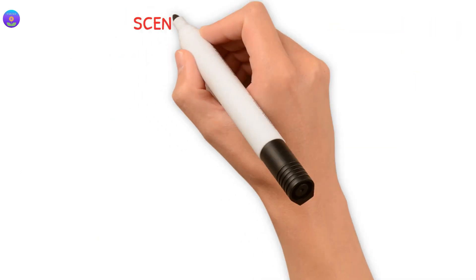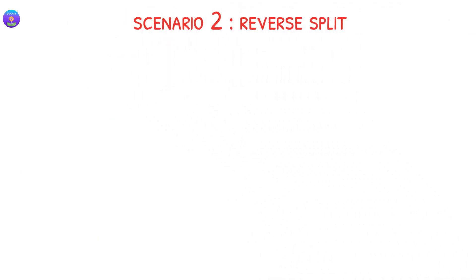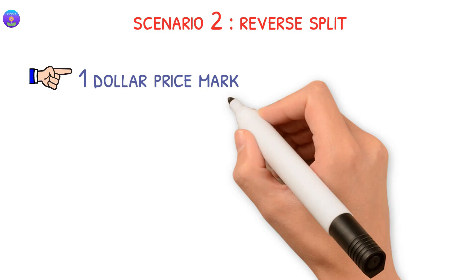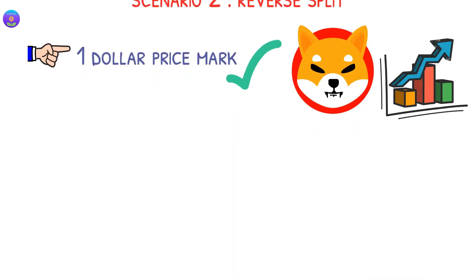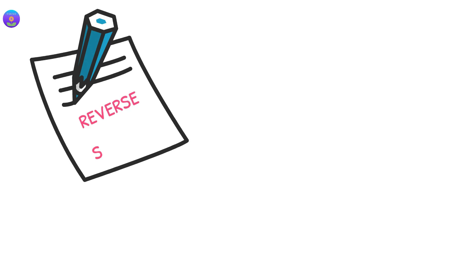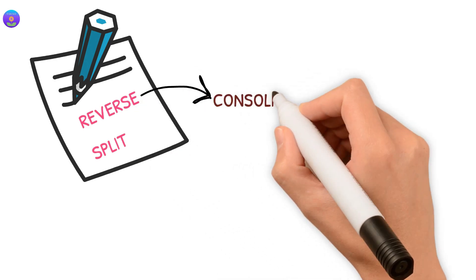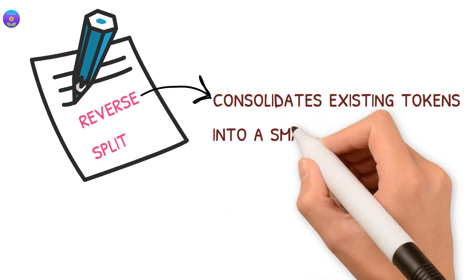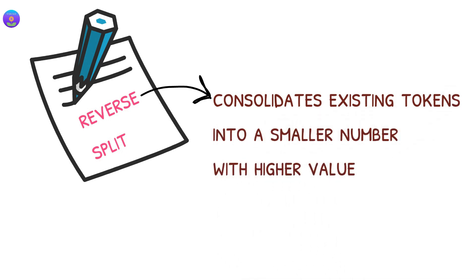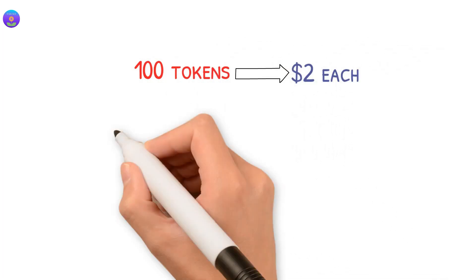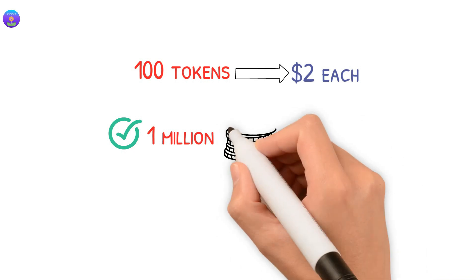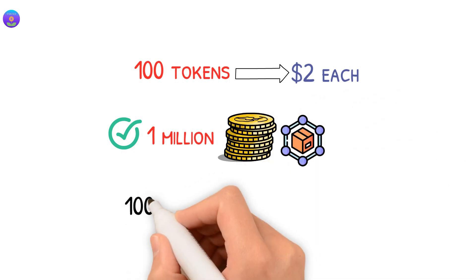If we go to the second scenario which is the reverse split, reaching the $1 price mark will be easier and it might take Shiba to reach a higher price. First, let's explain the reverse split. The reverse split is a process that consolidates existing tokens into a smaller number with higher value. To simplify it more, let's say you have 100 tokens, each token worth $2 and there are 1 million tokens available in the circulating supply.